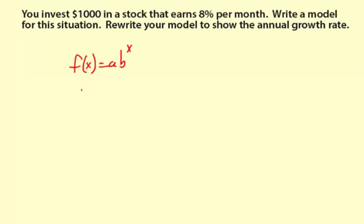Initial amount is $1,000. Let's go ahead and get more specific. Function of time, f of t, is $1,000. And then 8% per month is the growth rate. That means 1.08 is the growth factor. So we're going to be multiplying by 1.08.